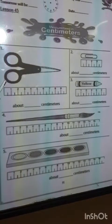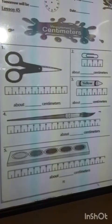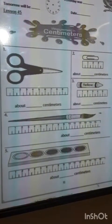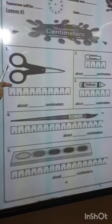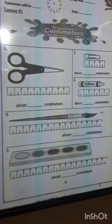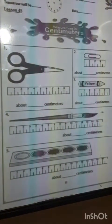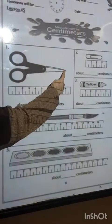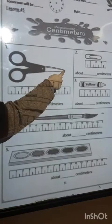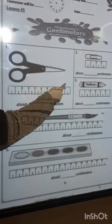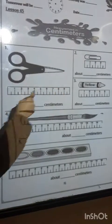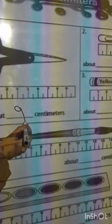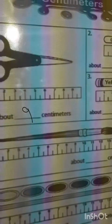We have some objects and we want to measure them. How to measure this object? First, we must start from the starting point. The starting point is 0. And put your finger at the end of this object — it will be 9. So this is about 9 centimeters.